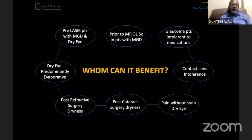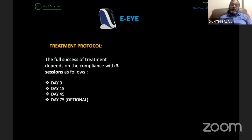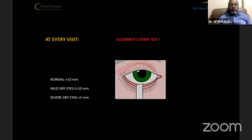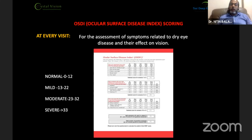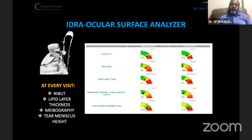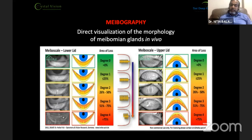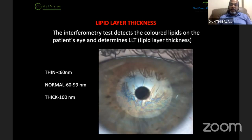The treatment protocol includes three compulsory treatments at day 0, day 15, and day 45, with an optional fourth treatment on day 75. Treatment success is assessed at every visit using a Schirmer strip test, Oxford grading for staining, and an OSDI score for subjective improvement. An IDRA ocular surface analyzer is used to check meibography, NIBUT, lipid layer thickness, and tear meniscus height.